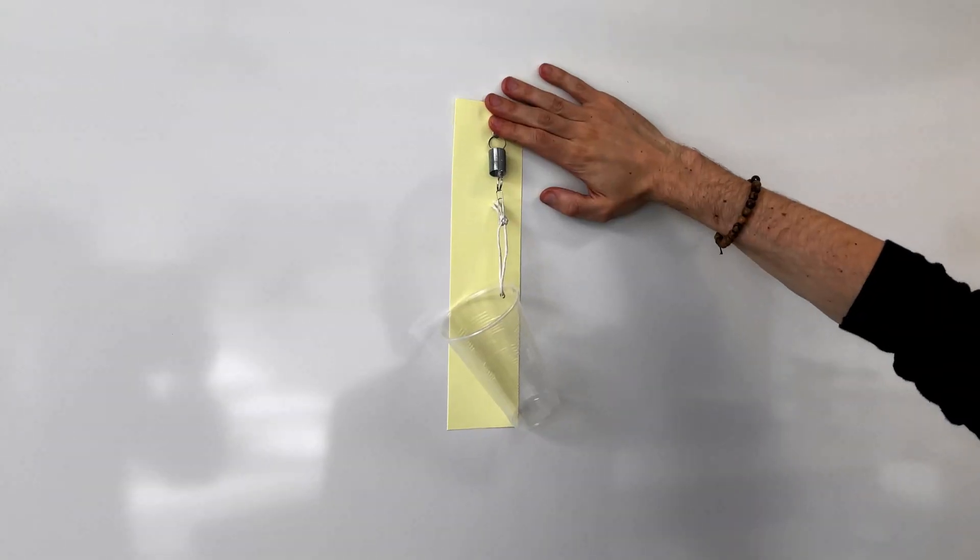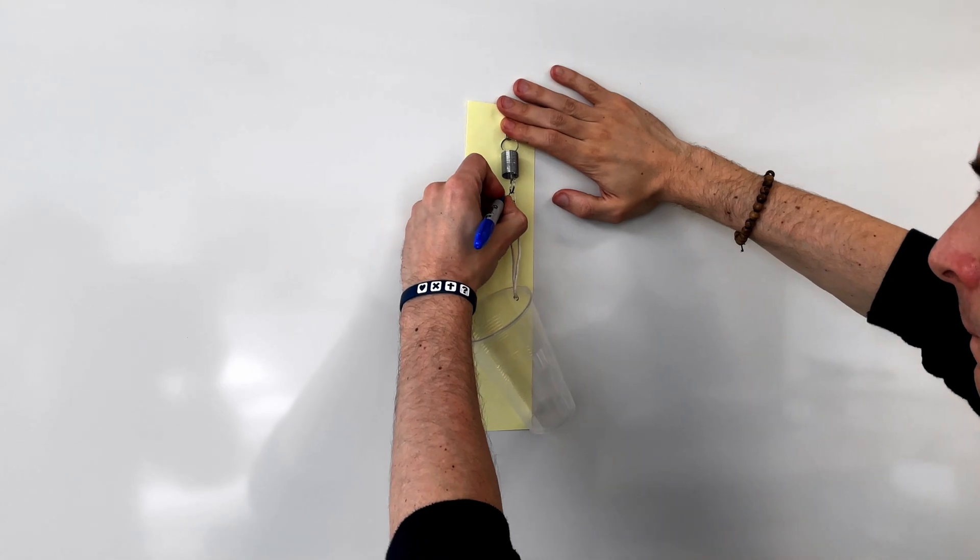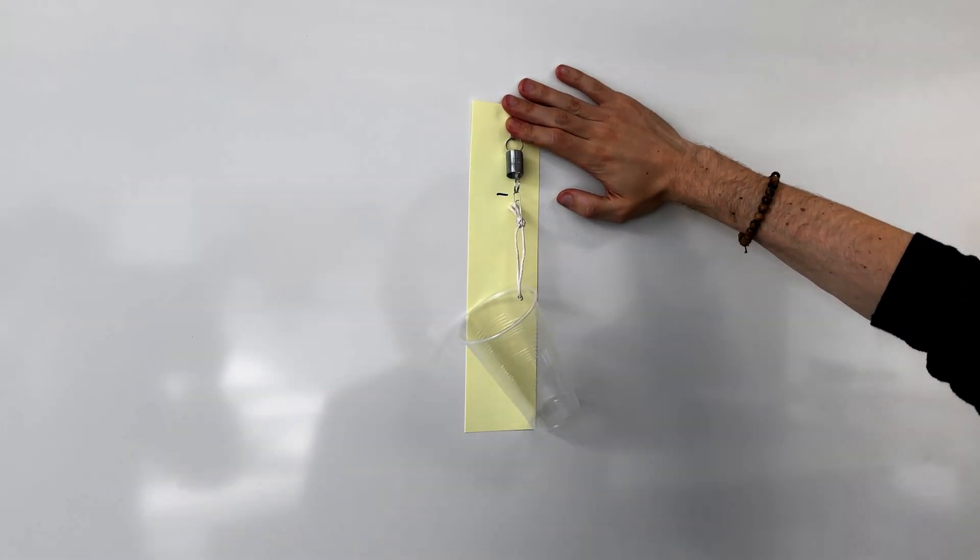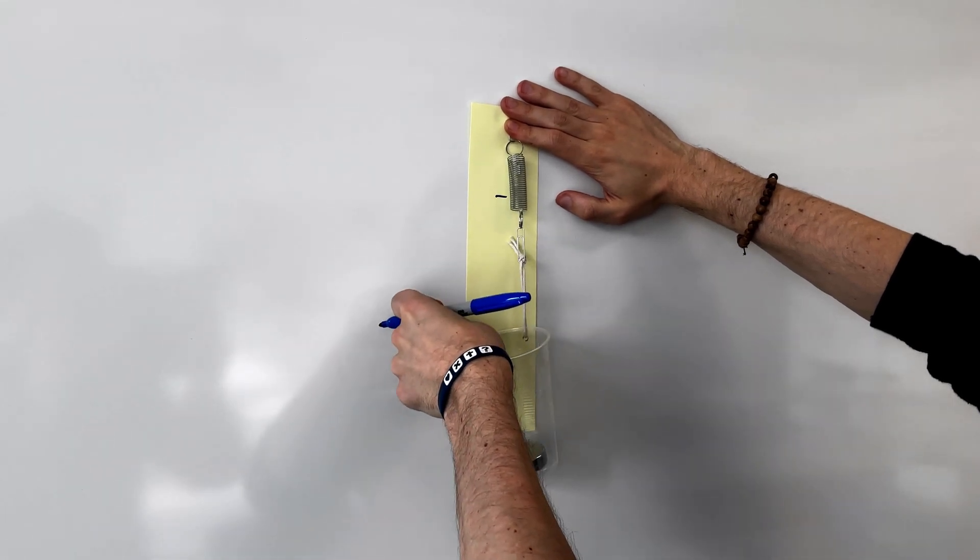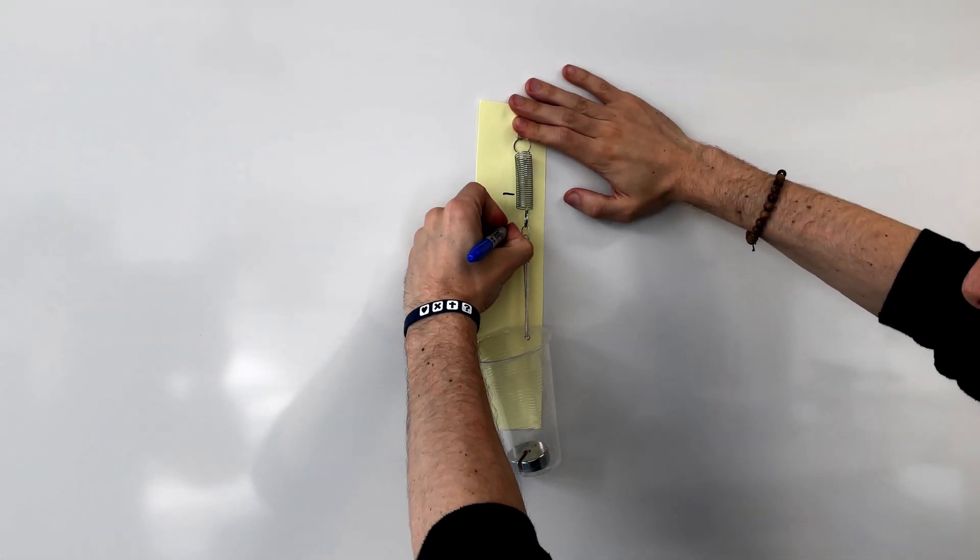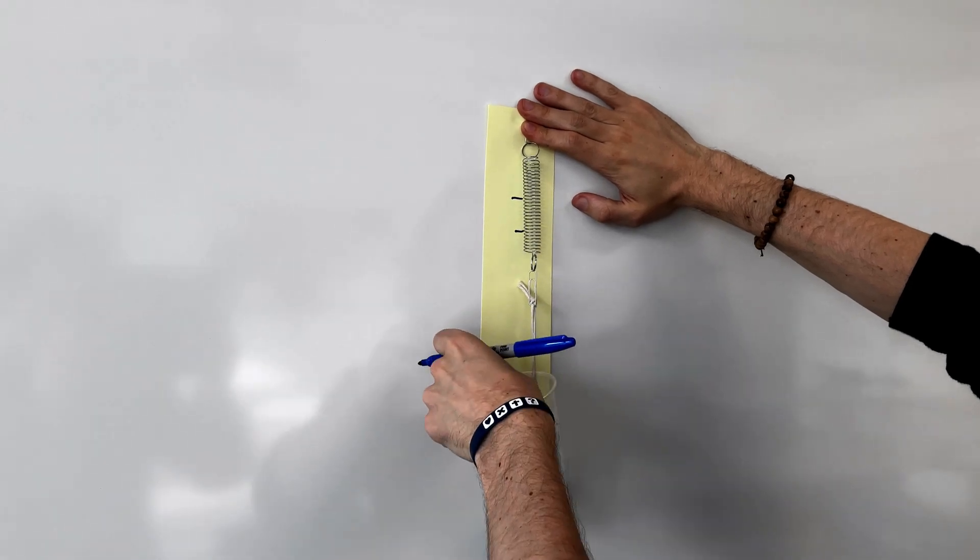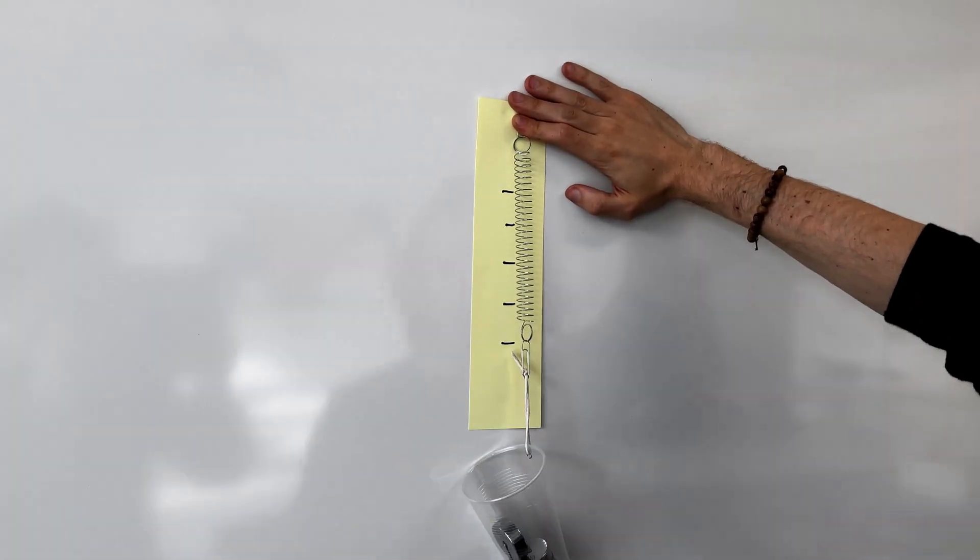Next pick a point to measure from. I've picked where the spring meets the paper clip. Next to that point put a mark on the card. Then add a 100 gram mass and do the same thing. Keep adding 100 gram masses putting marks next to that point you picked.